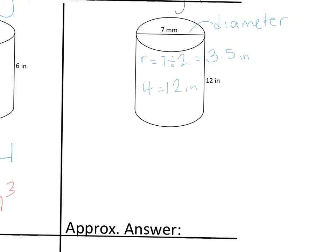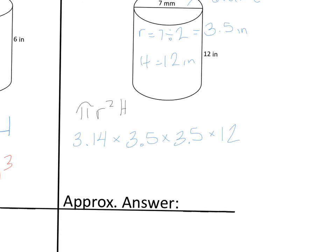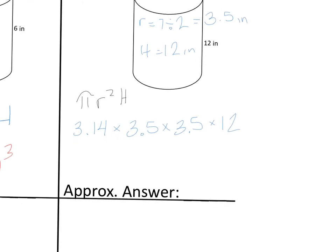So our formula is pi r squared height. We're doing approximate, so we're going to do 3.14 times the radius squared, and we know that radius squared means multiply the radius by itself, times our height of 12, and that's going to give us a volume of 461.58 inches cubed.